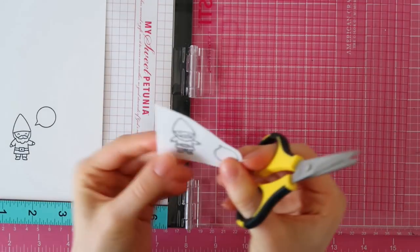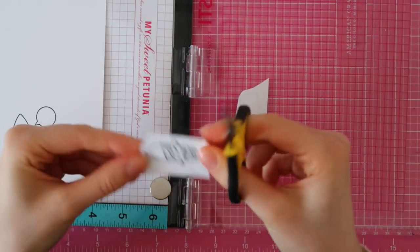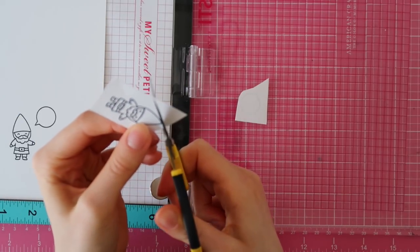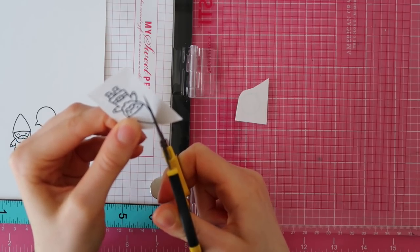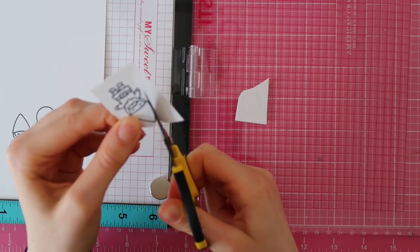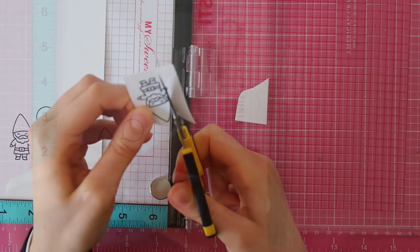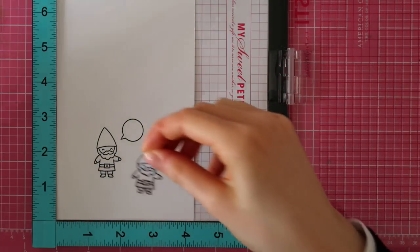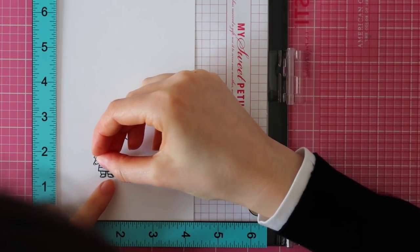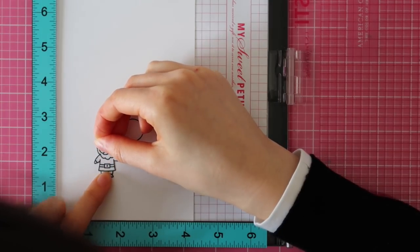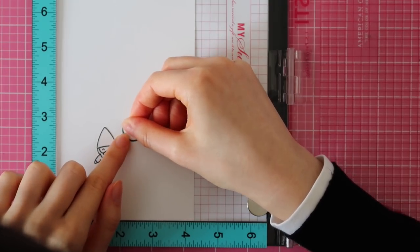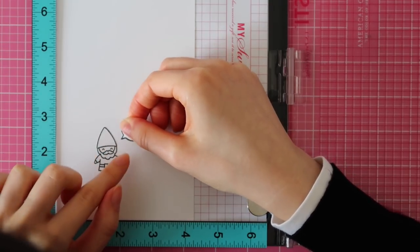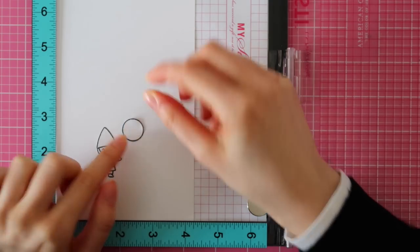I picked up the stamps with my MISTI tool, then I inked them up using Memento Tuxedo Black ink. Next I stamped these two stamps once again on some masking paper and I am cutting these out with my EK Success Cutter Bee scissors. I'm going to remove the backer sheet and then I am adhering the mask on top of my stamped images. You always have to stamp the images you want to have in the front first and then stamp the images that you want to have behind the images that are in the front.